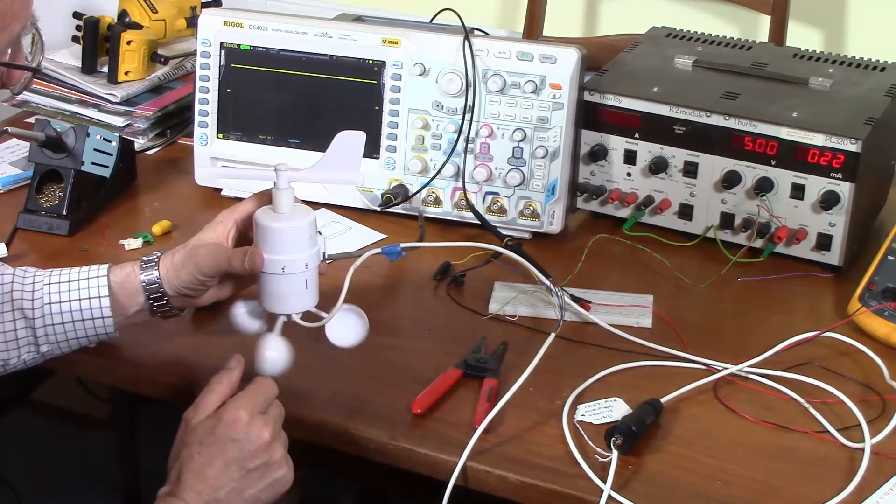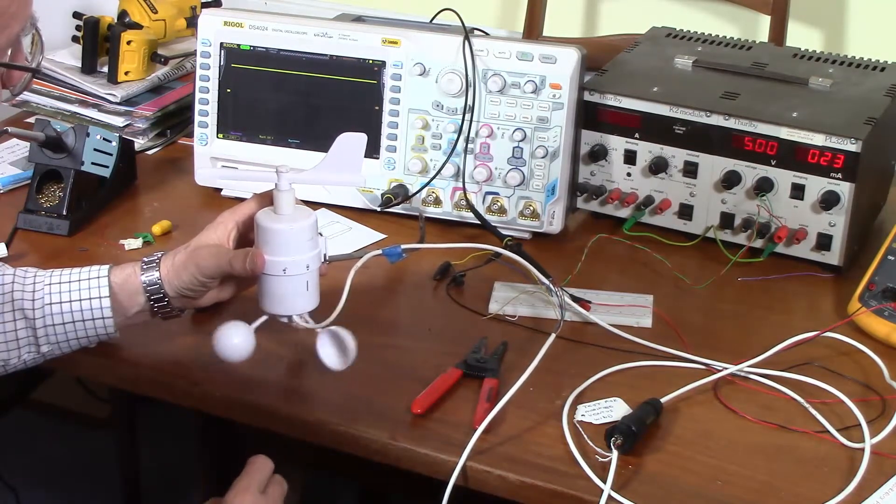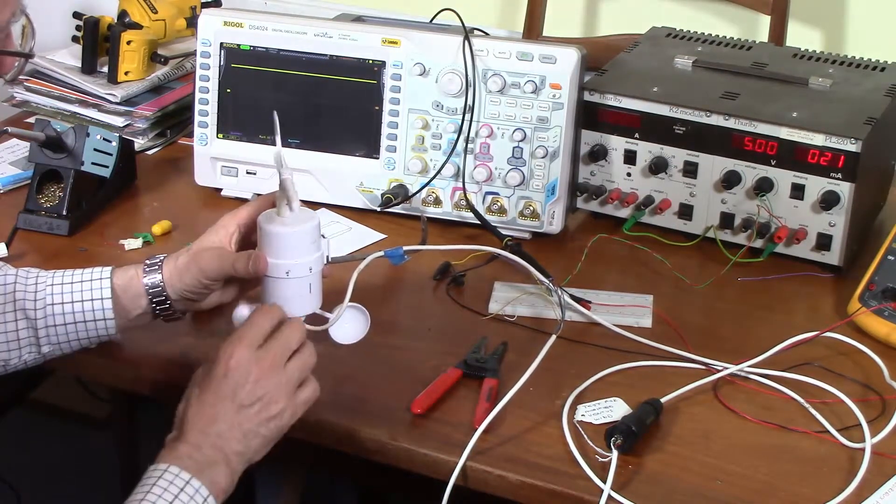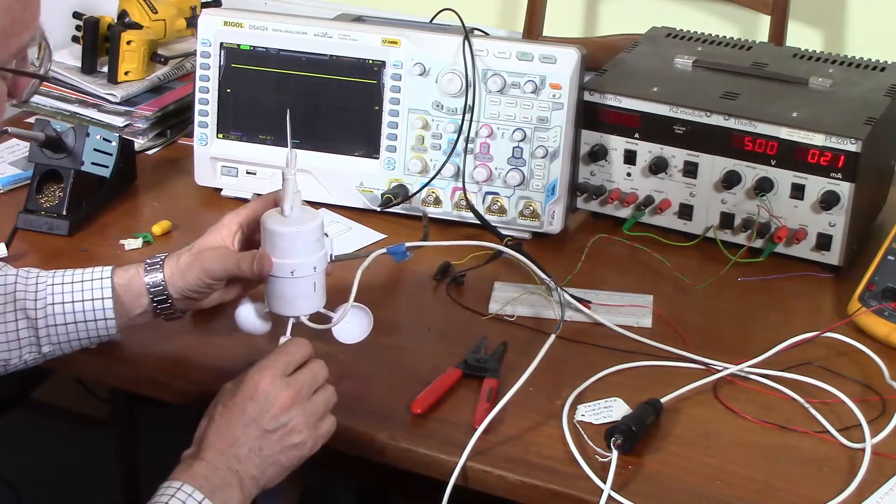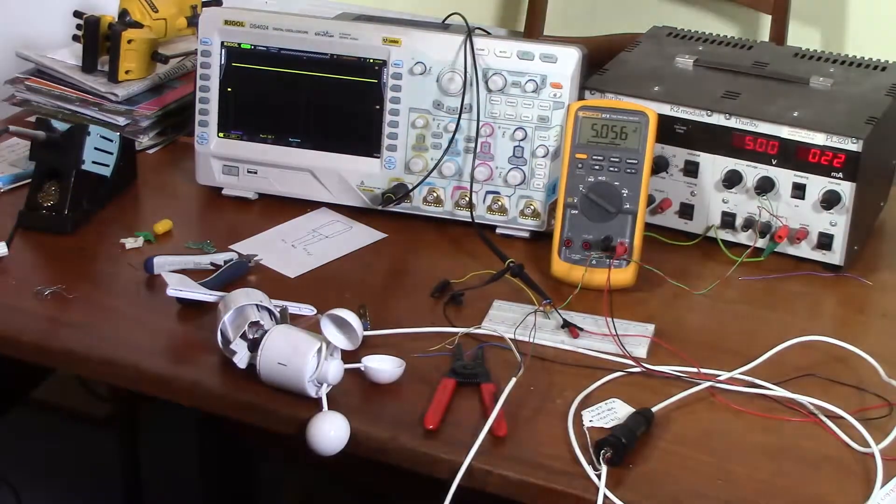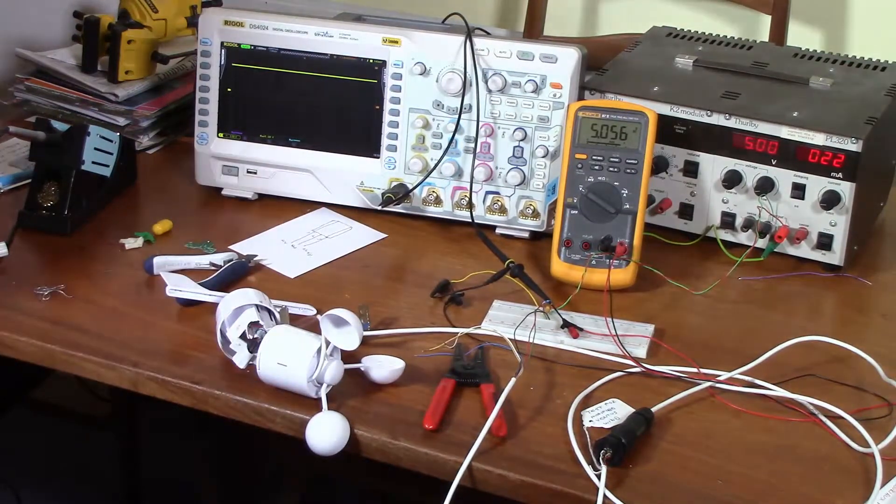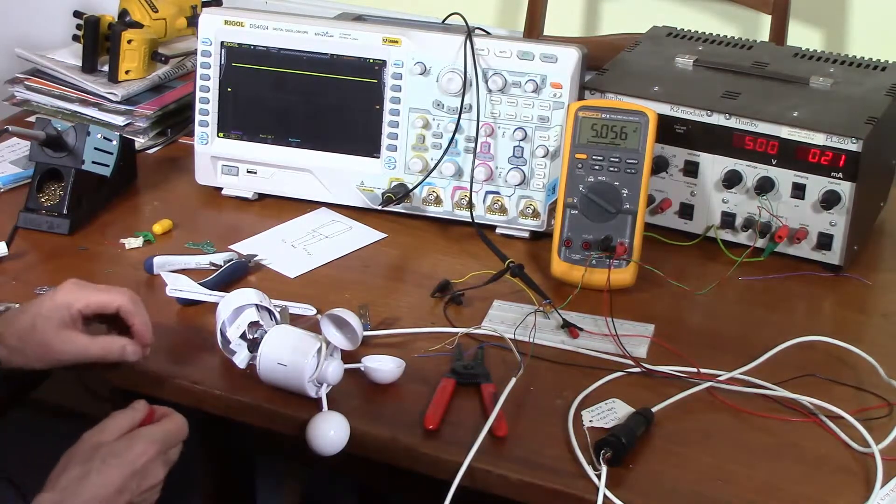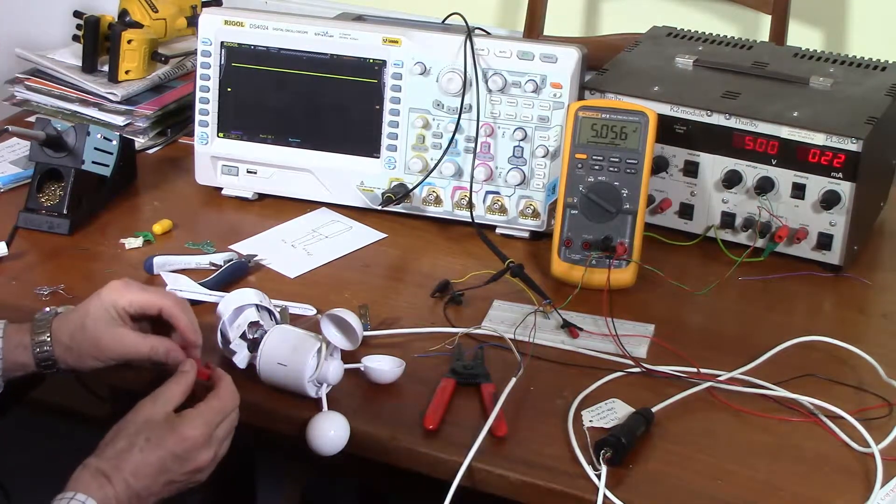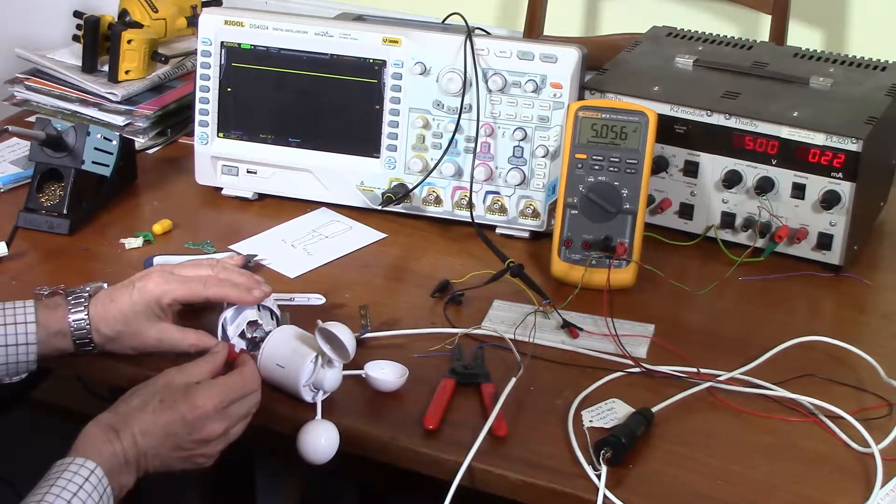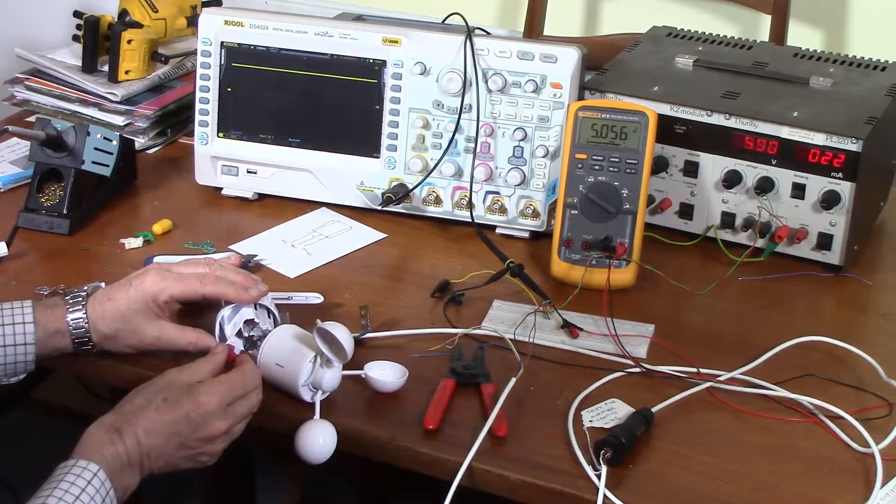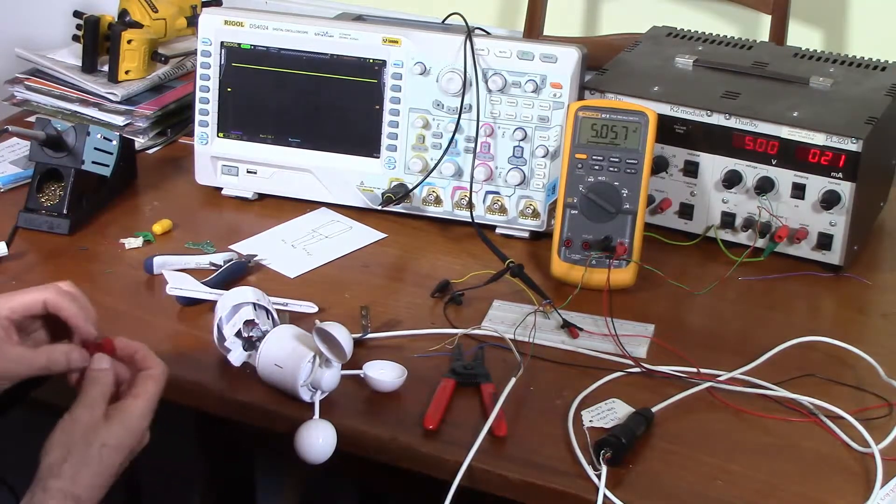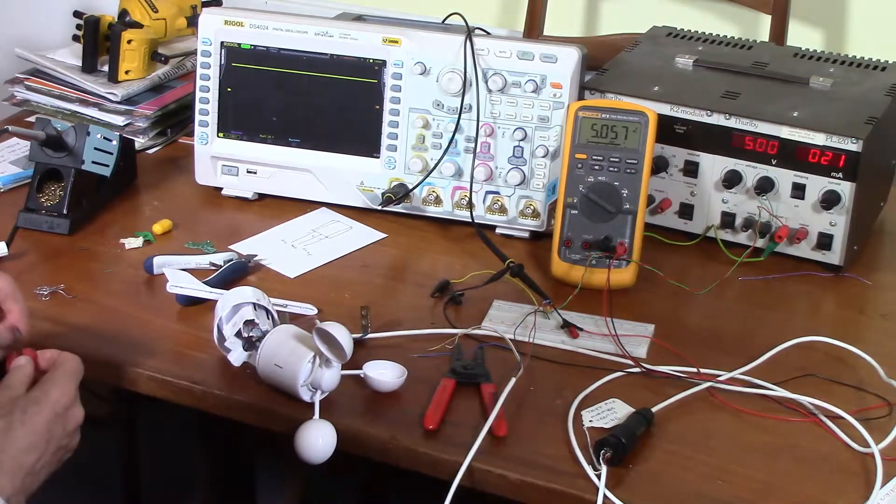Well that doesn't seem to be working. The output is stuck at plus 5 volts. Which is not what's supposed to be happening. Well let's see if we can get it to work with the magnet. It's not working. So I think I've got this sensor upside down.